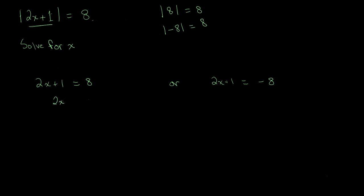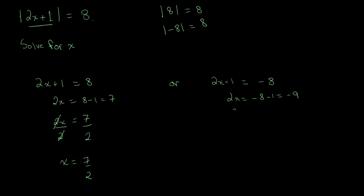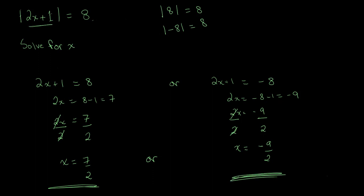Solving the first equation: 2x equals 8 minus 1 equals 7, so x equals 7 over 2. For the second equation, 2x plus 1 equals negative 8: subtract 1 from both sides to get 2x equals negative 9, then divide both sides by 2 to get x equals negative 9 over 2. So x is either 7 over 2 or negative 9 over 2.